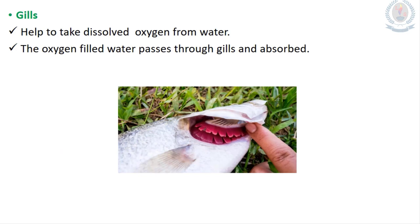Gills help to take dissolved oxygen from water. The oxygen-filled water passes through the gills and oxygen is absorbed. These gills help with the respiratory process inside the aquatic animal's body, especially in fish.